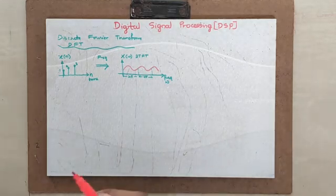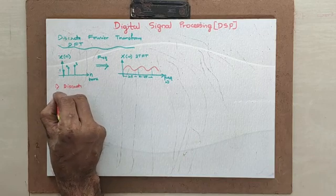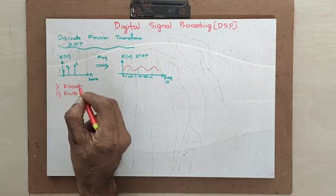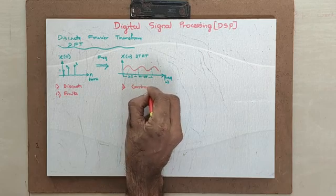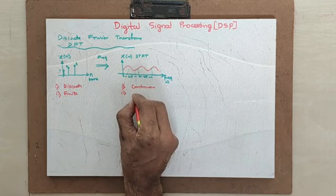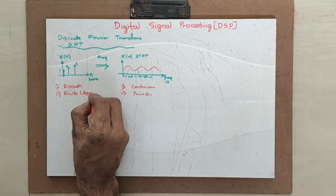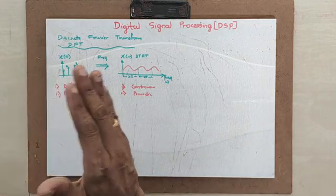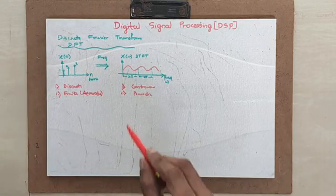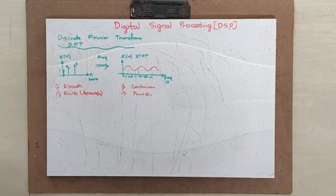In the time domain, the signal was discrete and finite. In the frequency domain, it became continuous as well as periodic. It was finite and aperiodic in time; here it is periodic. This is the difference when a finite signal is taken into the frequency domain. We will be dealing with this DTFT signal so as to derive the DFT formula.